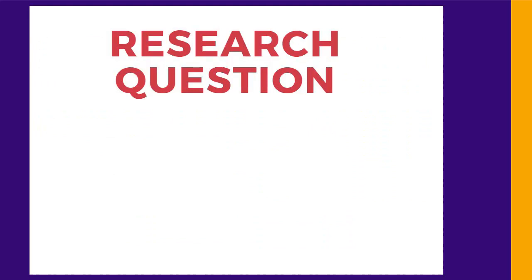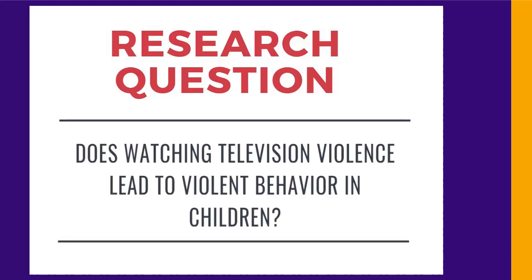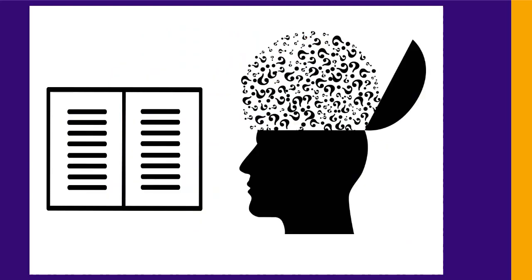How does this work? First, it helps to have a question in mind. If you haven't been given one, try to put your topic into the form of a question that you want to find out more about. For example: Does television violence lead to violent behavior in children? Now you need to find some scholarly sources to help you answer the question. Keep an open mind when you're reading and see what the existing research says, rather than deciding on an answer before you start.